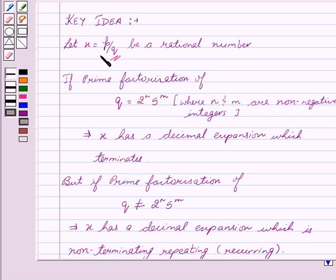this implies x has a decimal expansion which terminates. But if prime factorization of q ≠ 2^n × 5^m, this implies x has a decimal expansion which is non-terminating repeating, that is recurring.